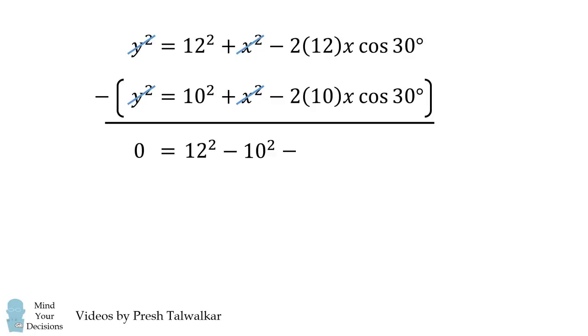And then we have to be careful here. We have a negative 24x cosine of 30 degrees minus a negative, so that'll become a positive 20x cosine of 30 degrees. So that results in negative 4x cosine of 30 degrees.